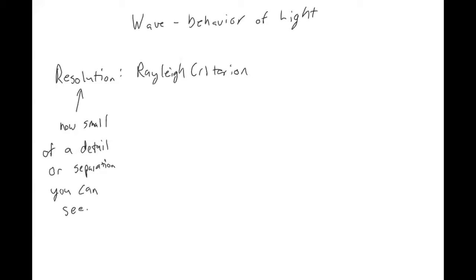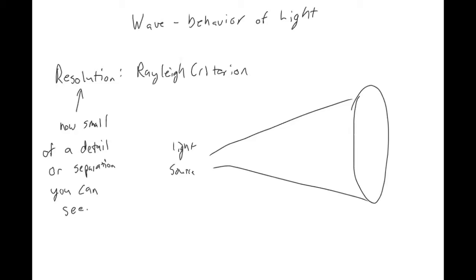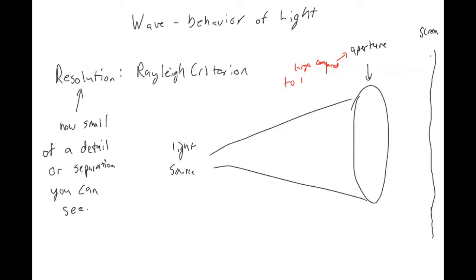What we're going to picture here is similar to the slits we were talking about, but now we have a light source going through a circular aperture, and there's a screen on the other side that the light is shining onto. The size of this aperture is large compared to the wavelength of the light.